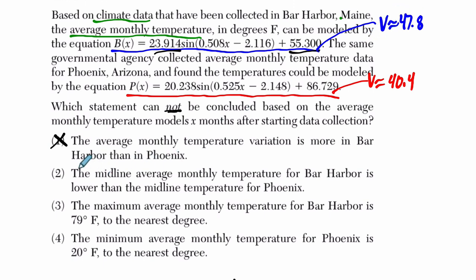But we're looking for a statement that's not true. Right, the variation is higher in Bar Harbor. The midline average monthly temperature for Bar Harbor is lower. Then the midline temperature for Phoenix. Well, here's our midline. It's 55, and that's lower than 86. So that's true. So we're looking for a false statement.